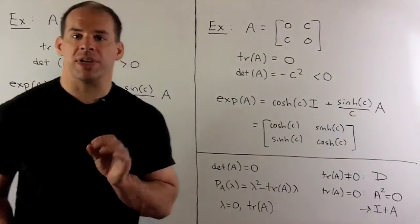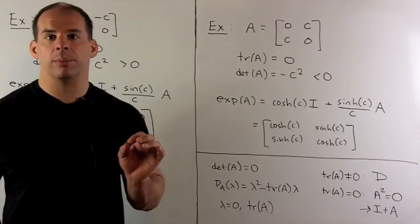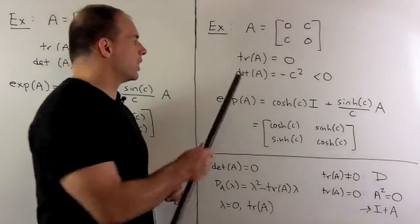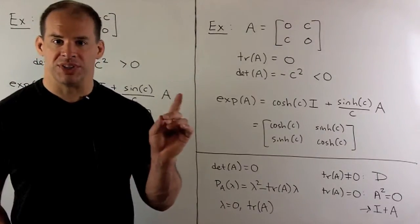If we suppose A equals zero C, C zero, where C is non-zero, then trace of A is zero, determinant of A is minus C squared, which is negative.